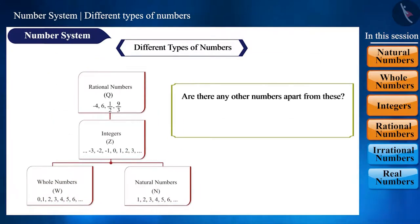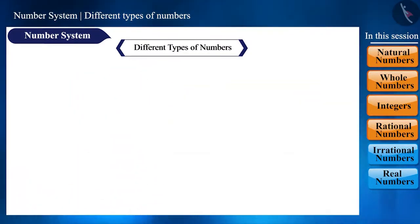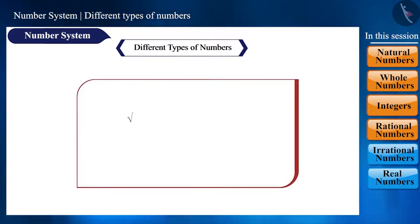Are there any other numbers left? Are there any numbers that we cannot represent as rational numbers? Yes, there are countless numbers which we cannot write as rational numbers, such as root 2, cube root of 3, cube root of 5, root 3, pi, root 15, etc.